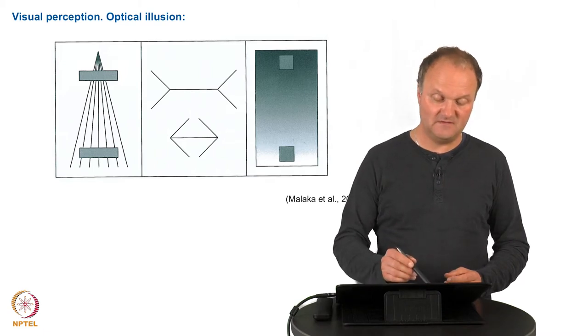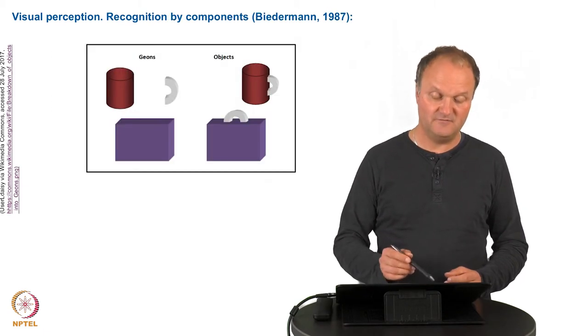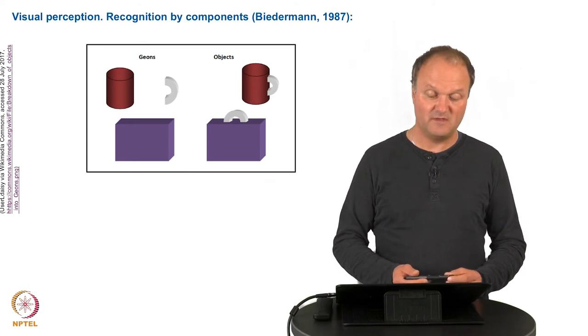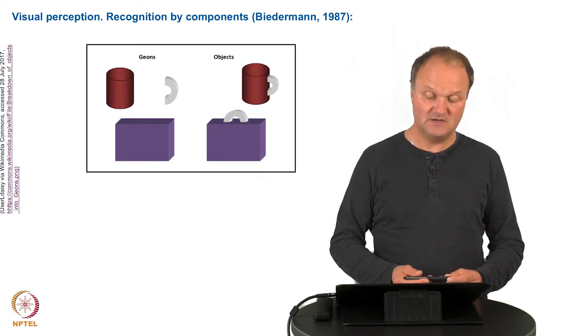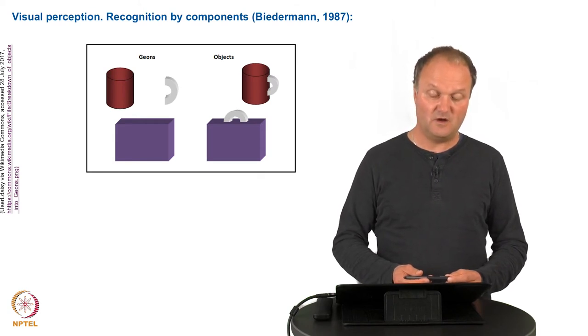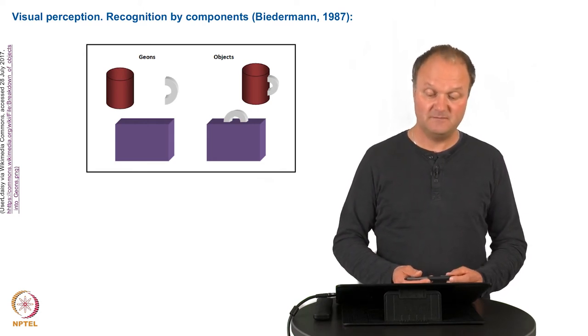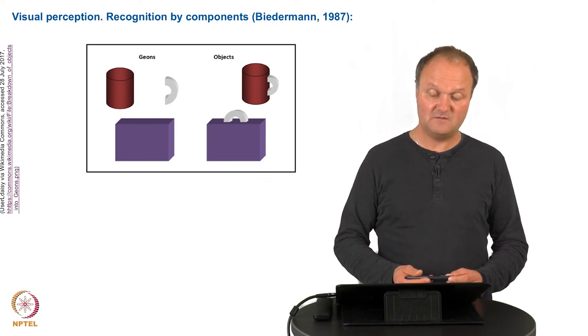Now the formation of objects has been also the object of different perceptual theories. For example, there is the so-called recognition by components theory which can be actually used in order to produce objects for visual presentation.